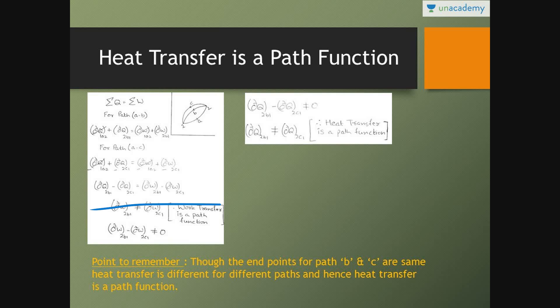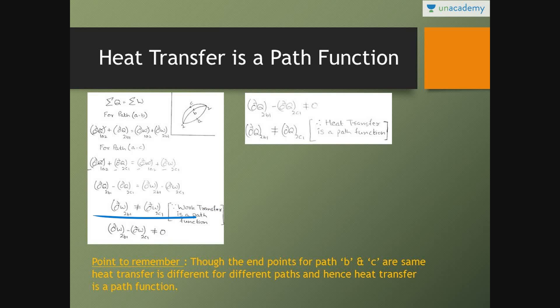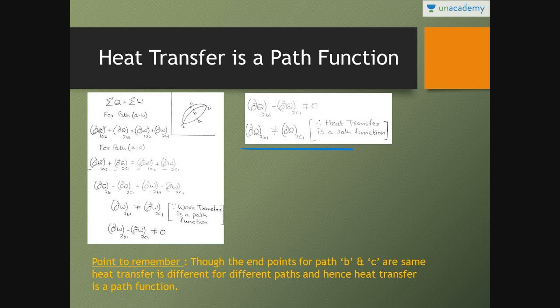Since paths B and C are different, and we know that work transfer is a path function — if the path changes, the value changes — DW(2B1) is not equal to DW(2C1). Therefore DW(2B1) minus DW(2C1) is not equal to zero. Consequently, DQ(2B1) minus DQ(2C1) is also not equal to zero, meaning heat transfer through path B is not equal to heat transfer through path C. Hence, heat transfer is a path function.